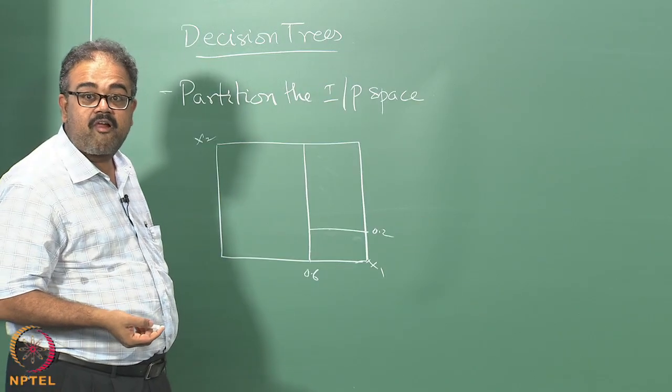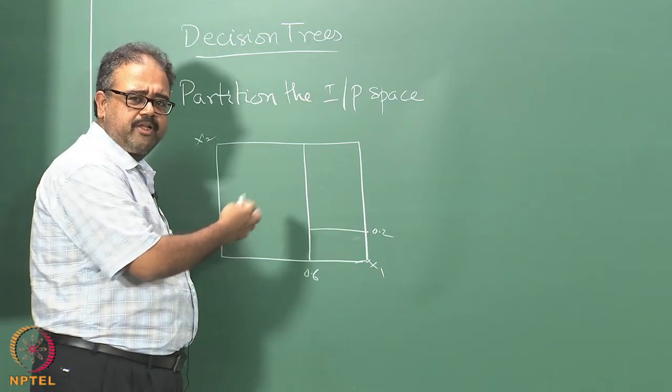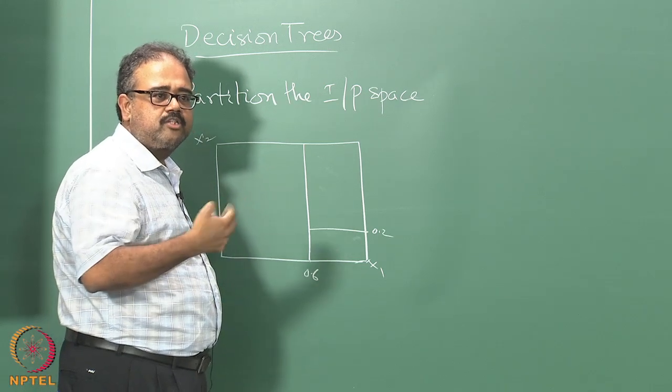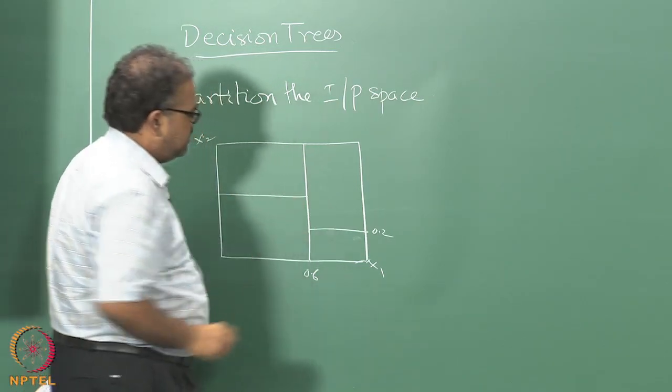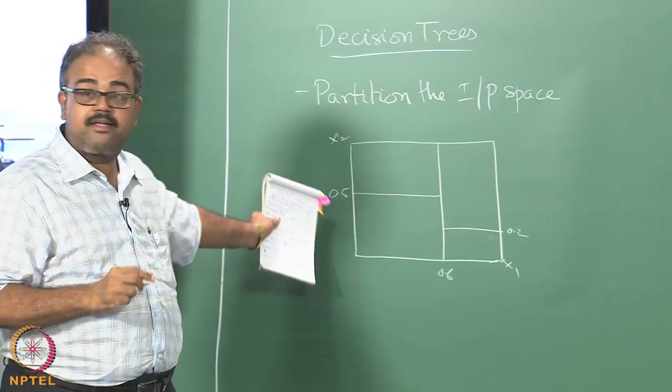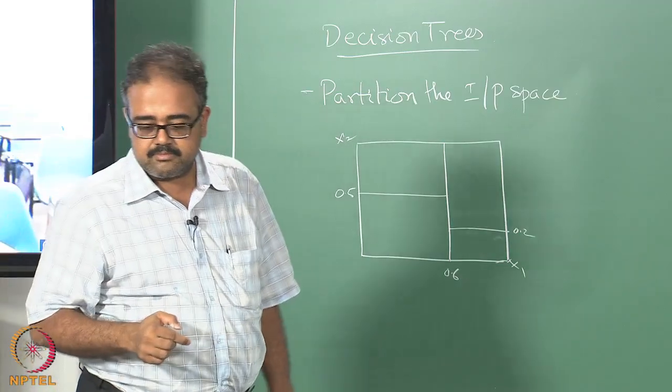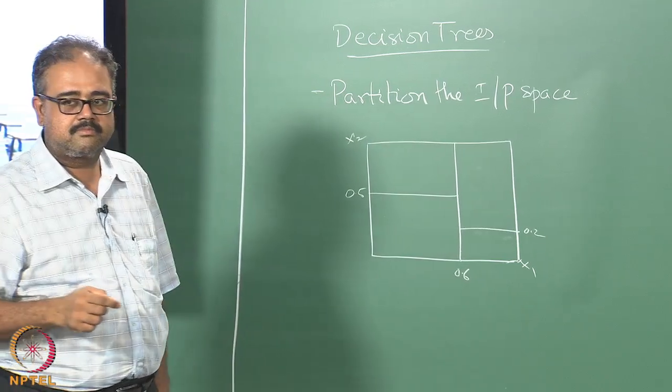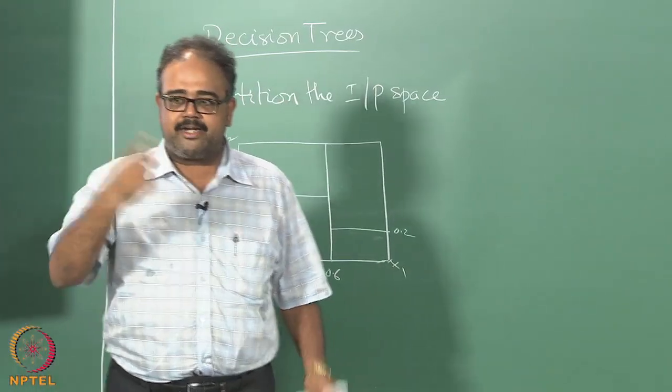Typically they alternate, but you can also ask a question like: given that x1 is less than 0.6, is it less than 0.3? Or you could ask is x2 greater than 0.5? As soon as I write that, it becomes 0.5.